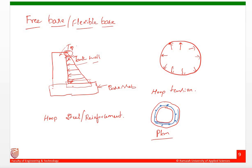In order to make the design economical and avoid unnecessary wastage of steel, we need to divide the tank wall into segments. The division of segments depends on the designer's choice — either 1 meter, 0.5 meter intervals, etc. At every interval, we determine the magnitude of the hoop tension and provide steel for that particular magnitude.